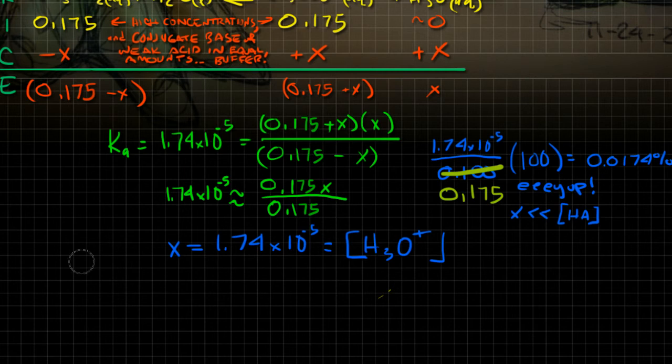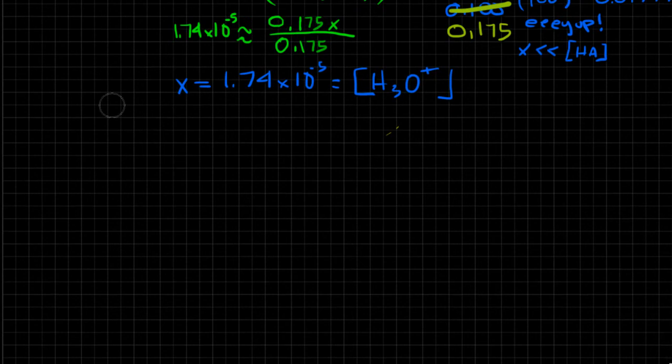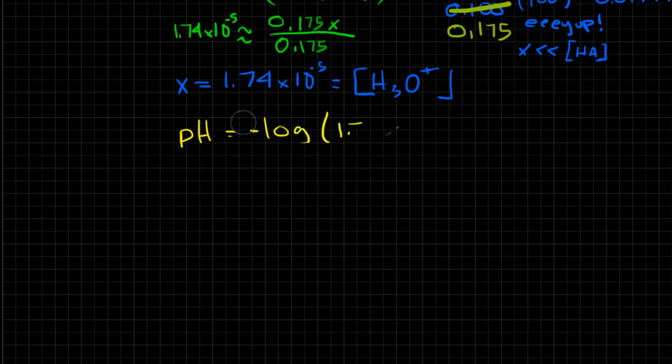Now there's an easier way to do this, especially when you're dealing with buffer solutions, because you can use the Henderson-Hasselbalch equation. Let's solve first for the pH. We have hydronium, so pH equals the negative log of my hydronium concentration, which gives us 4.76. That's our pH. It's less than 7, so we know it's acidic. It'll be less acidic than the original one because I've got a conjugate base.